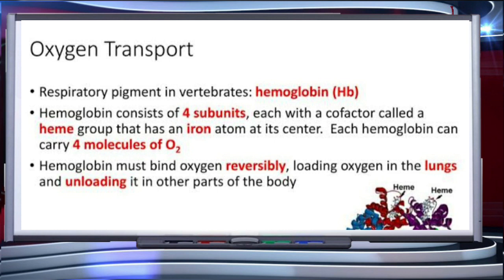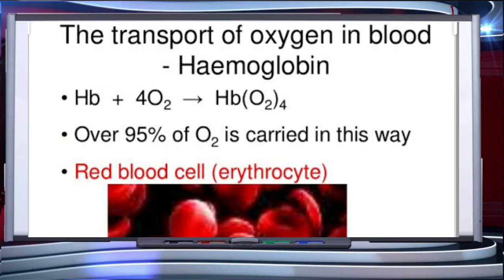Hemoglobin must bind oxygen reversibly, loading oxygen in the lungs and unloading it in other parts of the body. RBCs contain hemoglobin which forms oxyhemoglobin with oxygen, an unstable compound.